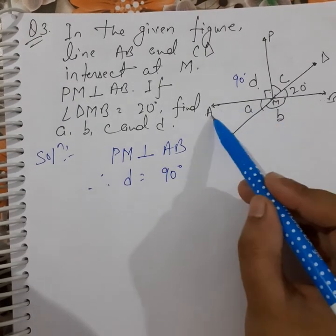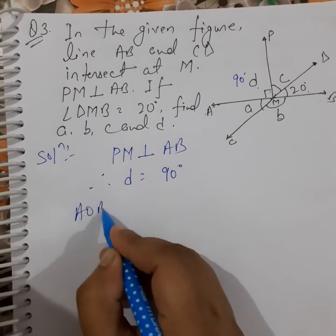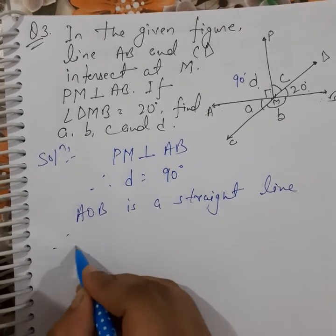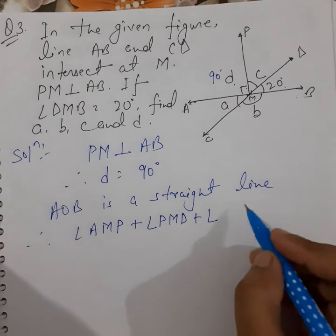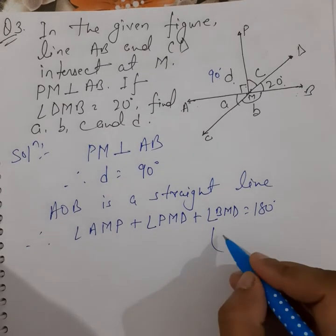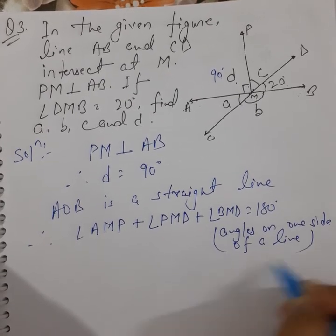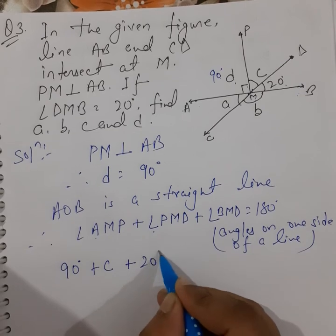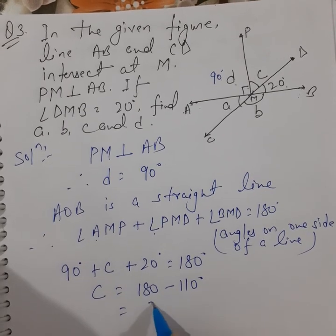AB is a straight line, so the angles on one side sum to 180 degrees. Therefore, angle AMP + angle PMD + angle BMD = 180 degrees. Since angle AMP = 90 degrees and angle BMD = 20 degrees, we get 90 + C + 20 = 180, so C = 180 − 110 = 70 degrees.